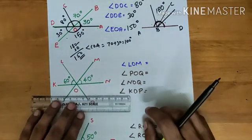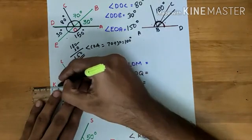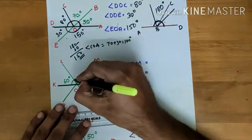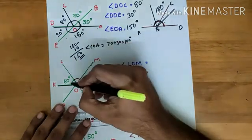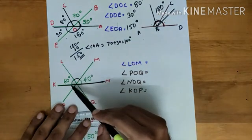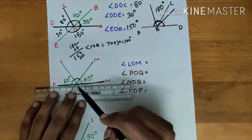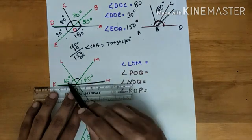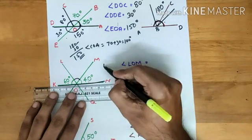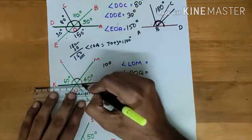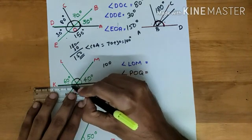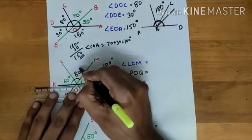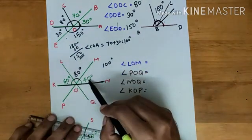If we do not consider these two lines and just consider line KN with the other two lines meeting it, the sum of these three angles will be 180 degrees. It is 60 degrees and 40 degrees, so 60 plus 40 is 100. Since the sum of these three angles is 180 degrees and the sum of these two is 100, the remaining angle LOM must be 80 degrees.